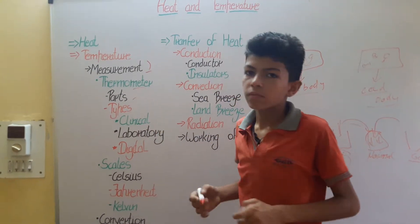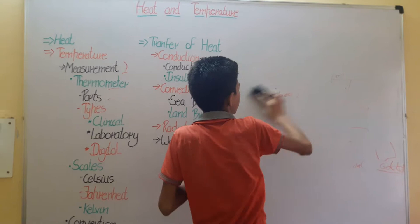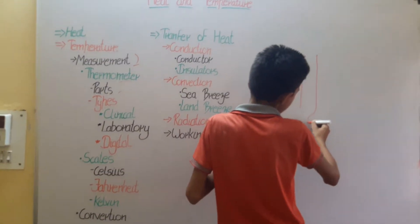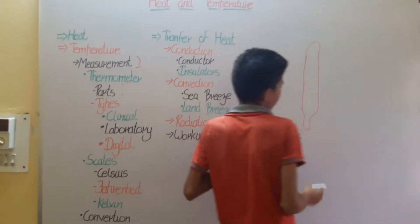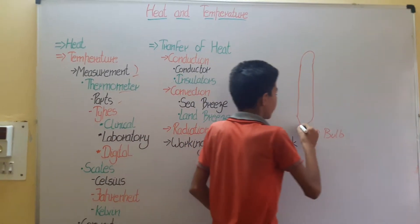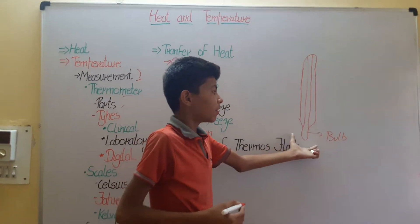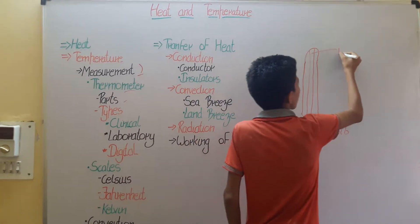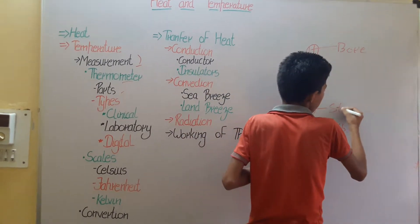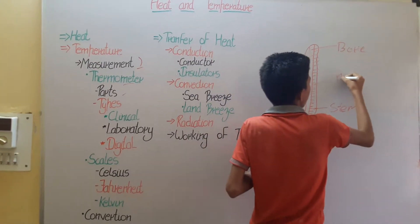Now we will learn about the parts of the thermometer. This is the thermometer. First, it contains a bulb-shaped structure called the bulb, which holds mercury or alcohol in it. Then it is connected through a pipe in which the liquid flows. This glass stick is called the stem, and the numbering written on it is called the marking.